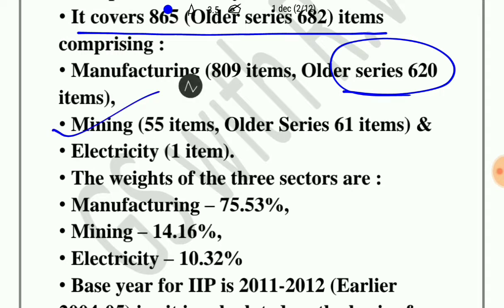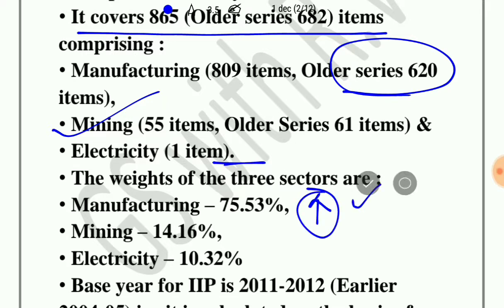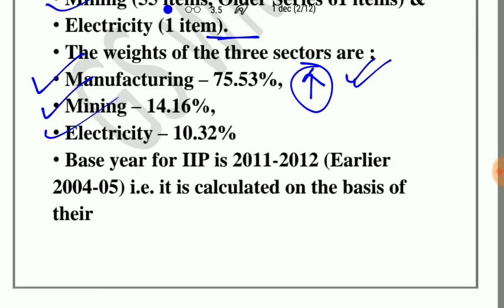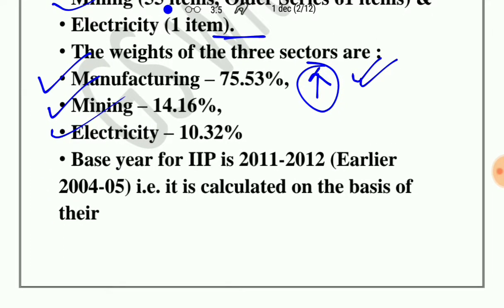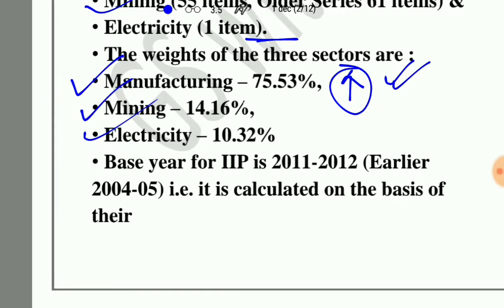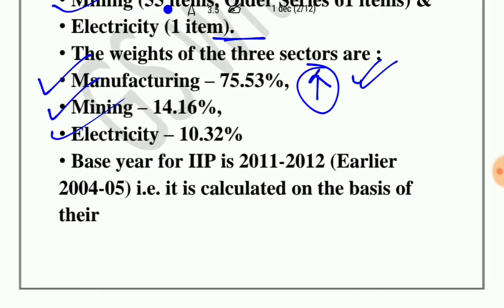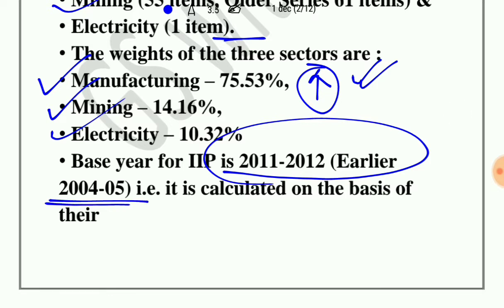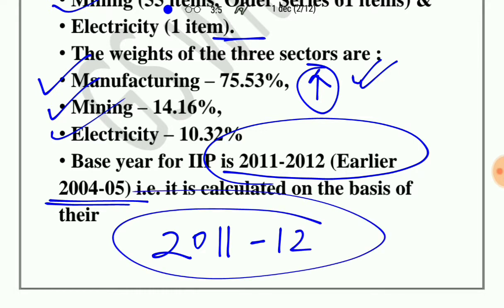Mining is 55 items and electricity is 51 items. The manufacturing sector has the highest weight percentage, followed by mining activities and electricity. The base year for IIP has changed to 2011-12 from 2004-05.